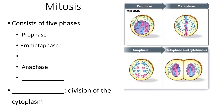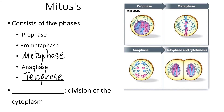Now mitosis itself can be broken down into five phases: prophase, prometaphase, metaphase, anaphase, and telophase. You will not be expected to memorize the different phases and what they mean, but you will have the opportunity to see some of these different phases in the virtual microscope lab activity that we'll be doing this week.